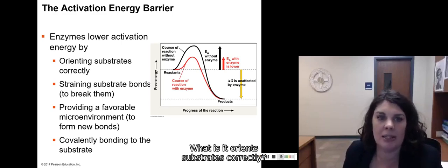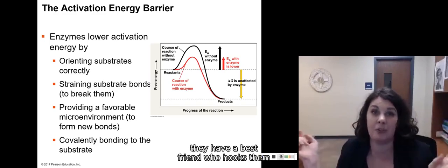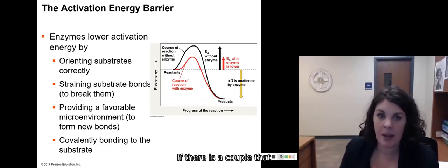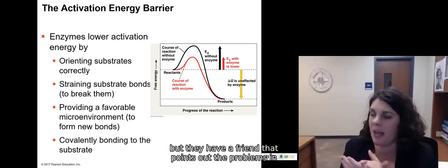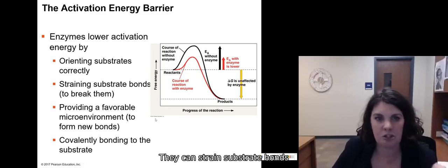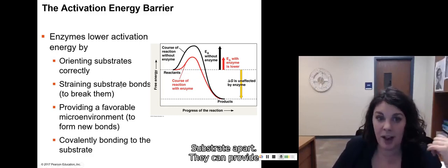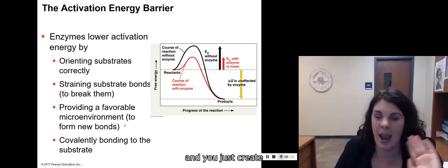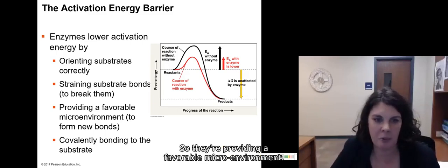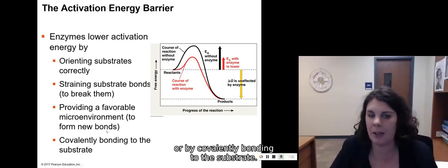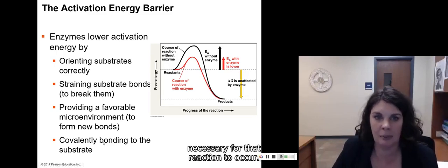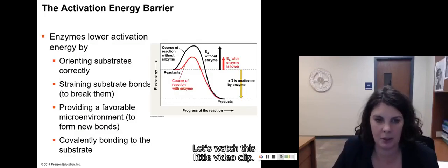Some ways that enzymes lower activation energy. One is it orient substrates correctly. So if there are two people who are eventually going to meet and fall in love, they have a best friend who hooks them up and introduces them to each other, they orient themselves together. They're going to hook up a lot faster. If there is a couple that is eventually going to break up, but they have a friend that points out the problems in their relationship and breaks them up faster, that reaction is going to happen faster. That's another way that enzymes work. They can strain substrate bonds and eventually just break that substrate apart. They can provide a favorable microenvironment. So your friends are dating and you just create this nice little dinner environment where it's easy for them to fall in love. So they're providing a favorable microenvironment. So it's easier to form those new bonds or by covalently bonding to the substrate. So it's going to bond to the substrate, which makes it easier for the substrate to undergo the reactions necessary for that reaction to occur. Okay, let's watch this little video clip.